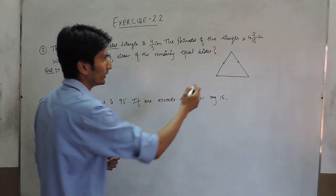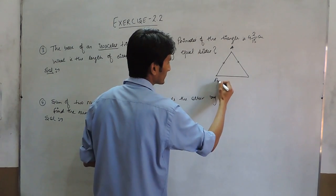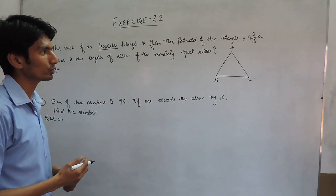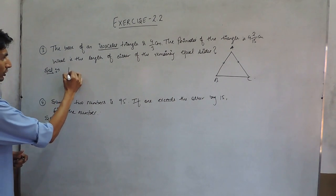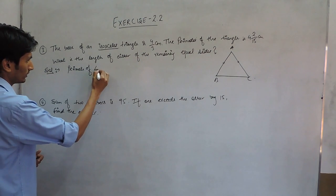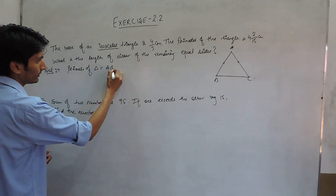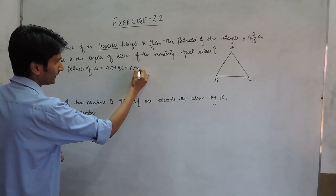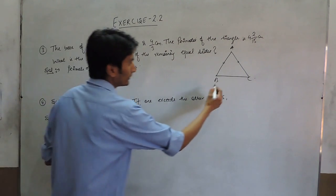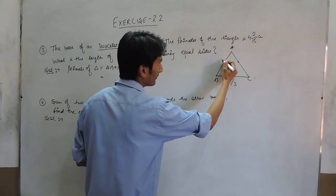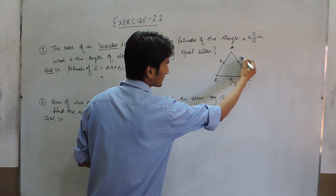So this is an isosceles triangle ABC where AB is equal to AC. We know the perimeter of a triangle is equal to AB plus BC plus CA. And we know the base BC is given as 4/3 and we have to find this and this.